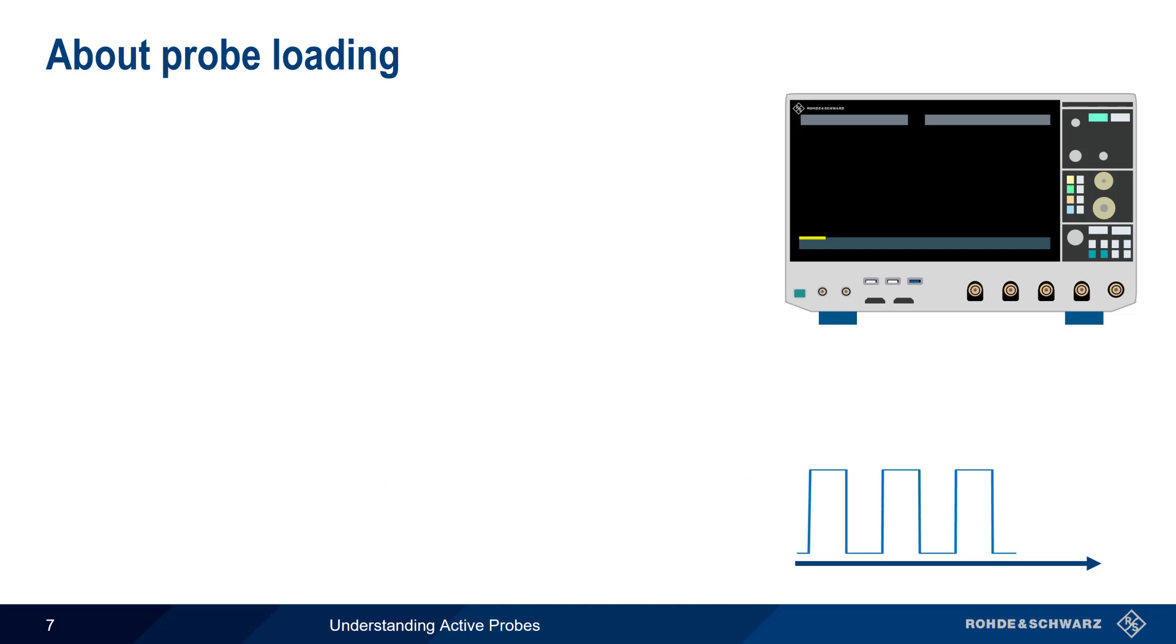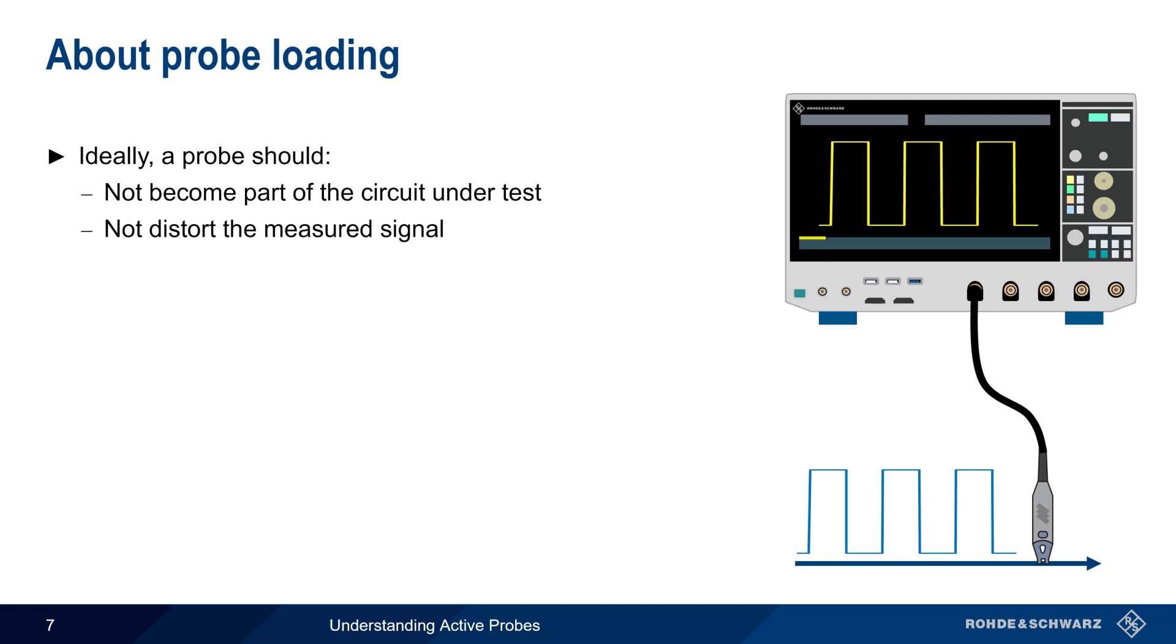We'll start with loading. Ideally, an oscilloscope probe should not become part of the circuit under test, and also should not distort the measured signal as seen on the oscilloscope.